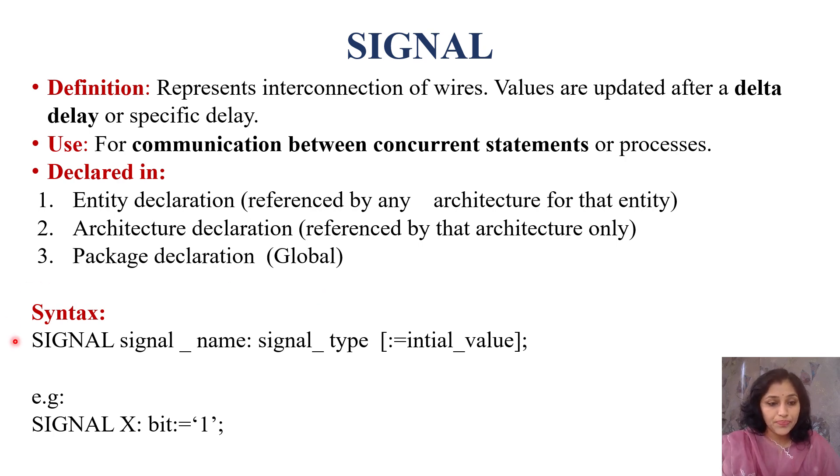Syntax for signal declaration is: first word is signal because we are declaring our signal data object. First word is mandatory signal. In case of variables, first word is variable. In constant, first word is constant. Signal, signal name, any name you can write. But the thing is, for name, it must start with alphabet, can be followed by numbers, and only one special character is allowed and that is underscore. Other special characters are not allowed.